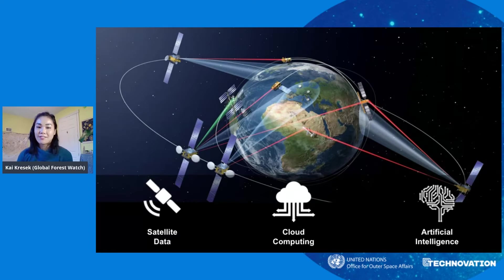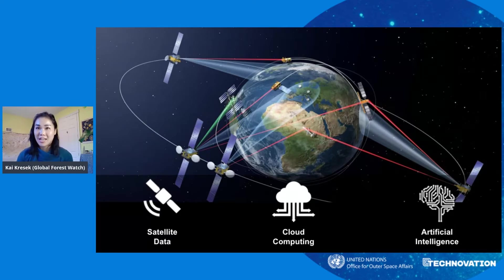Global Forest Watch uses several different types of satellites to measure forests. One example of a satellite we use is called Landsat, which photographs the Earth's surface, orbiting the planet 14 times every day.